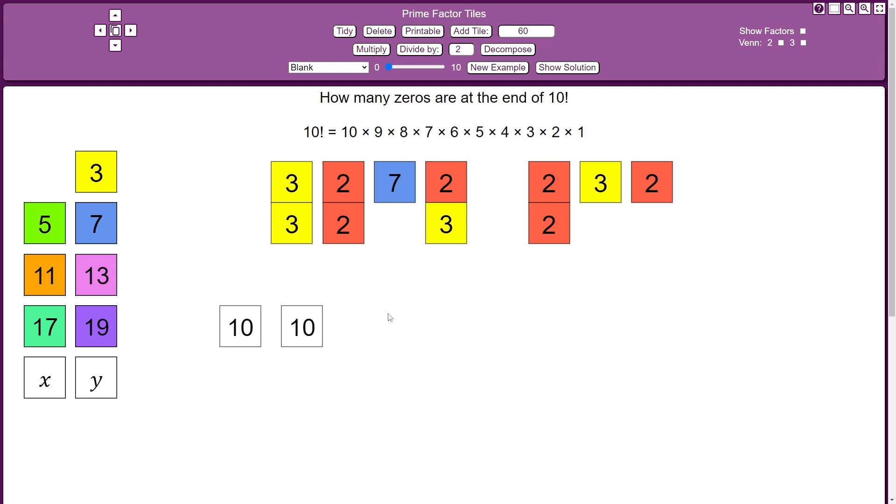So at the end of 10 factorial, there must be two zeros because it's going to be all this lot multiplied by 100.